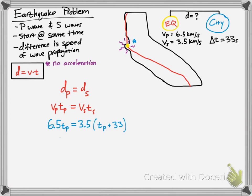We have 6.5 km/s times tp equals 3.5 km/s times ts. tp should be bigger, so it should be ts + 33 because the S wave is slower. That's why you add 33 seconds to make the equations equal. Then you distribute the 3.5 and solve for tp, and you get 38.5 seconds.